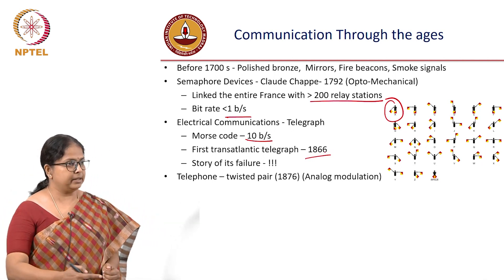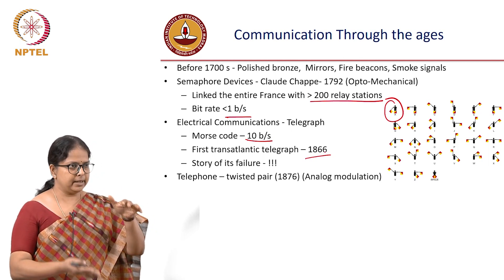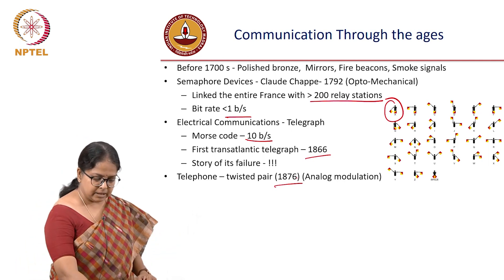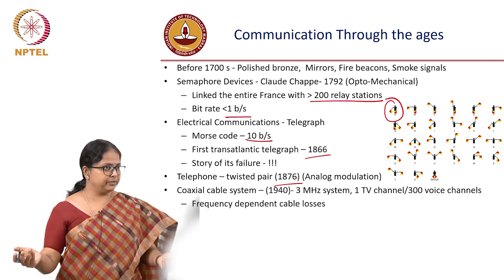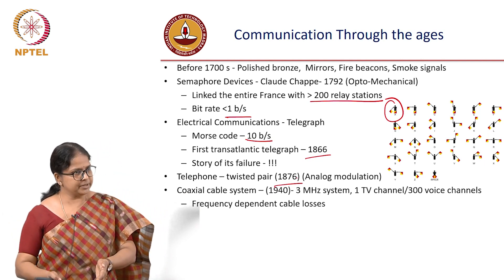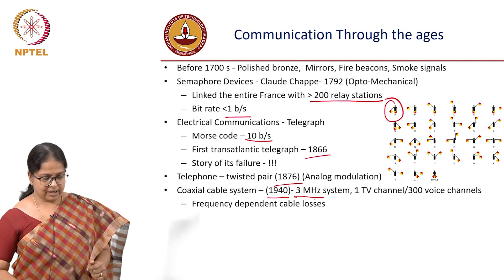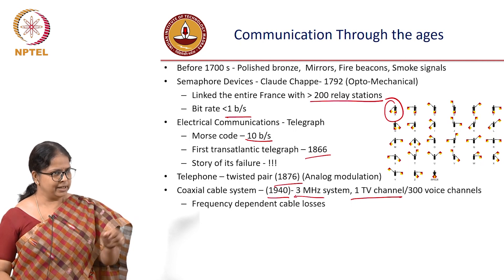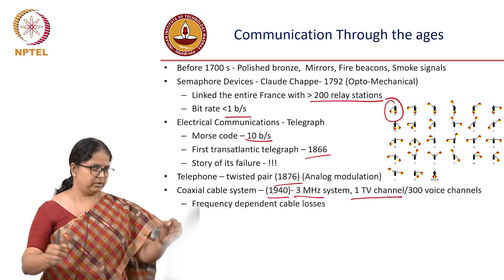About ten years later, twisted pair came in — the telephone line with analog communication where speech is converted by a microphone into an analog signal transmitted through copper twisted pair. As more subscribers were connected, data rates were insufficient. Twisted pairs were replaced by coaxial cables. As early as 1940, coaxial cables could deliver a 3 megahertz bandwidth — equivalent to one TV channel — and were used for all communication systems.